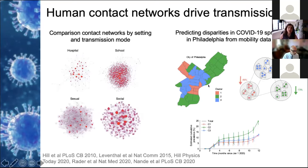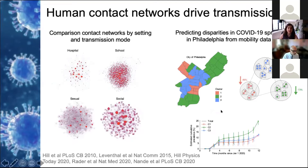Neighborhoods in Philadelphia cluster into a few groups based on demographics and socioeconomic status. We found that individuals are much more likely to have contacts with other individuals in their same neighborhood type. We also found that some neighborhoods were much more able to reduce their contacts and adopt social distancing measures during the worst parts of the epidemic in 2020 compared to others. This means that individuals living in certain clusters of neighborhoods had a much higher risk of infection, and that risk stayed high despite the implementation of social distancing policies.